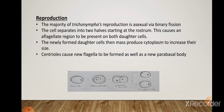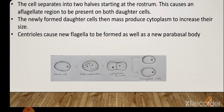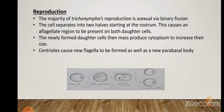Reproduction in Trichonympha is primarily asexual via binary fission. Each cell has two centrioles, one long and one short, located beneath the inner cap in the anterior end of the rostrum tube. These centrioles have a fixed position and play an important role in asexual reproduction. The cell separates into two halves starting at the rostrum, causing an aflagellate region to be present on both daughter cells. The newly formed daughter cells then mass-produce cytoplasm to increase their size, and the centrioles cause new flagella and a new parabasal body to be formed.